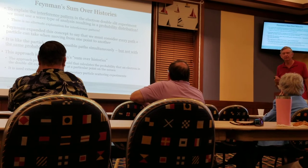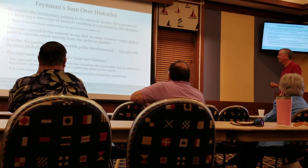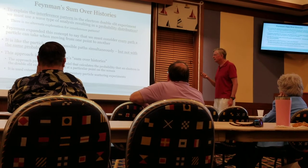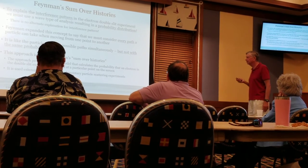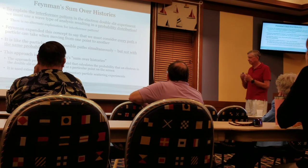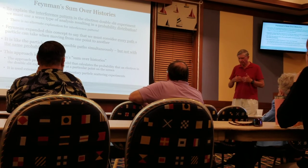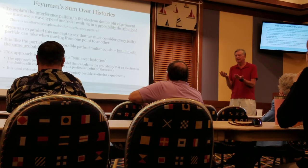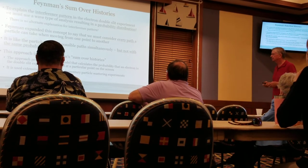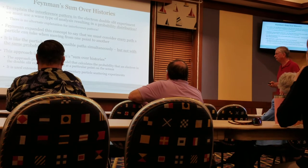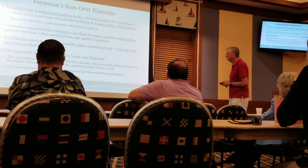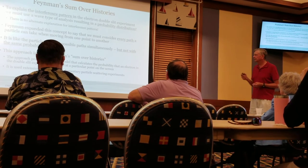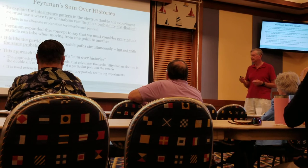That's hard to get your head around, but not all paths have the same probability. This is called Feynman's sum over histories — a sum over all possible ways a particle could get there. The approach provides us with a model that calculates the probability that an electron in a double-slit experiment will land at a particular point on the screen.